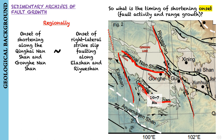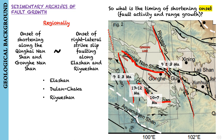Slip rates along the Elashan Fault suggest that fault initiation occurred at around 9 plus or minus 3 million years ago, slightly younger than fault movement to the southwest of the Elashan Fault in the Dulan-Chaka Highland, from around 17 to 12 million years ago. Similarly, slip rates along the Riyuexan Fault also suggest fault initiation at around 9 plus or minus 3 million years ago.